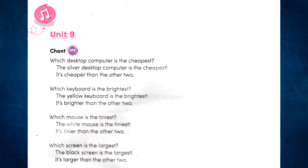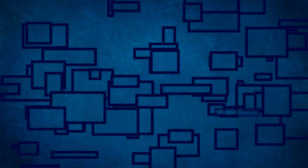Which desktop computer is the cheapest? The silver desktop computer is the cheapest — it's cheaper than the other two. Which keyboard is the brightest? The yellow keyboard is the brightest — it's brighter than the other two. Which mouse is the largest? The white mouse is the tiniest — it's tinier than the other two. The black screen is the largest — it's larger than the other two. Finish, everyone.